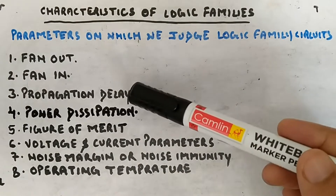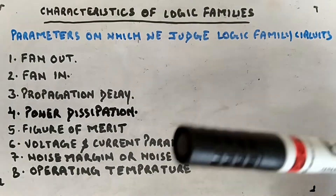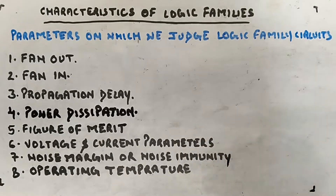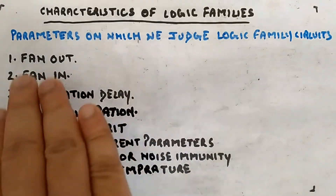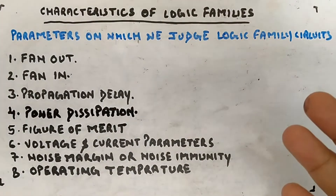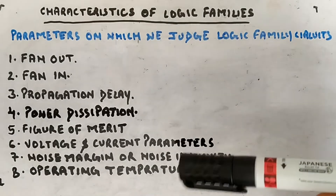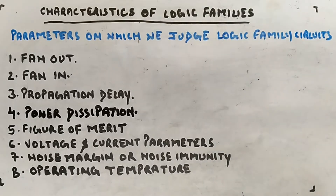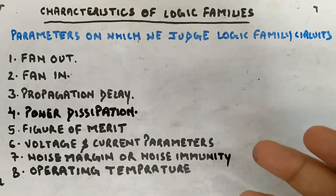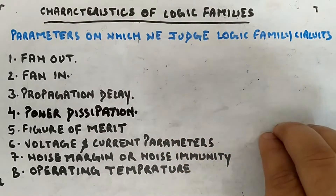Power dissipation is how much power a circuit takes for its operation. Propagation delay is how much time it takes to calculate the output. Fan in and fan out refer to how many inputs or outputs you can connect to a particular gate. These are the parameters on which you judge a logic family — whether it is good or not, or to compare with other logic families. Each parameter is numerical, so you can get a clear picture of which one is better and choose based on application.